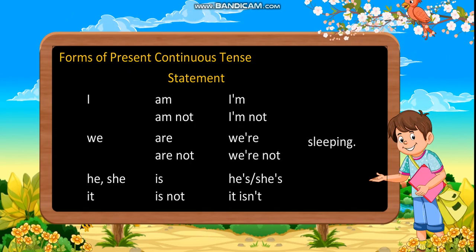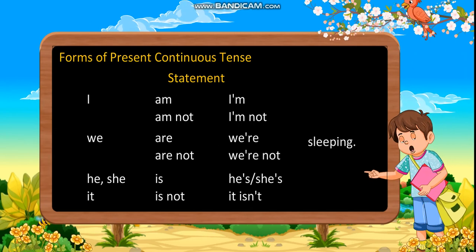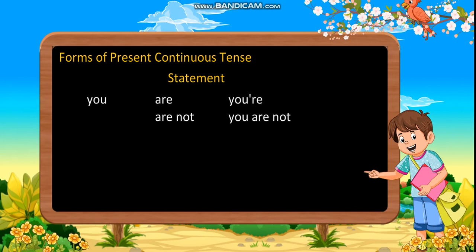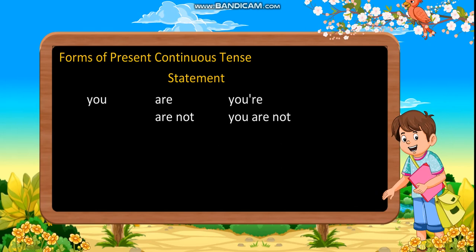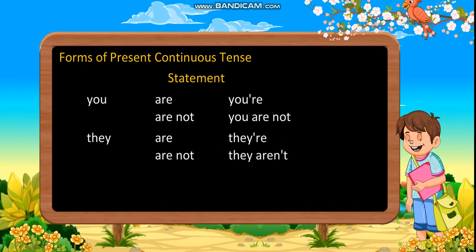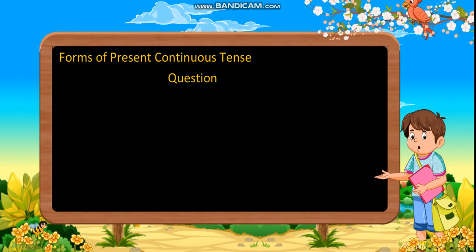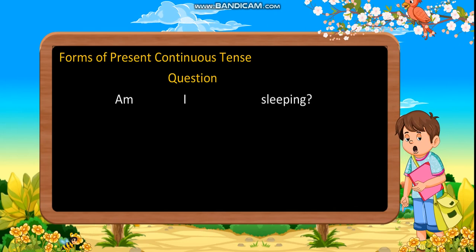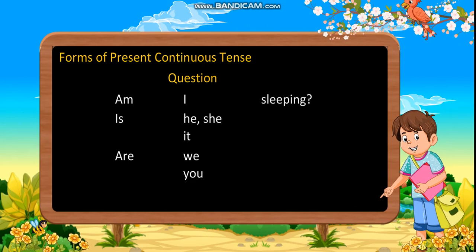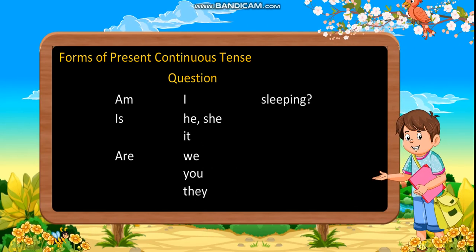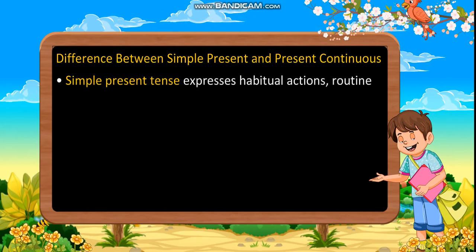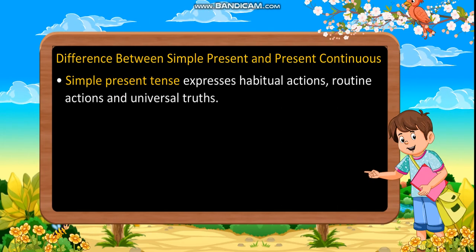Statement: I am / am not sleeping. We/You/They are / are not sleeping. He/She/It is / is not sleeping. Negative contractions: I'm not, we aren't, he/she/it isn't. Question: Am I sleeping? Is he/she/it sleeping? Are we/you/they sleeping?